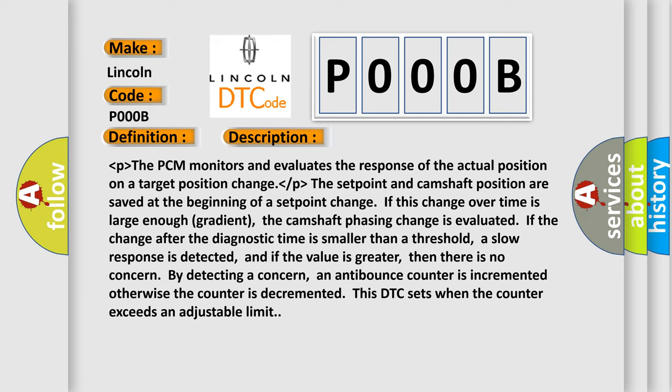A slow response is detected, and if the value is greater, then there is no concern. By detecting a concern, an anti-bounce counter is incremented; otherwise the counter is decremented. This DTC sets when the counter exceeds an adjustable limit.